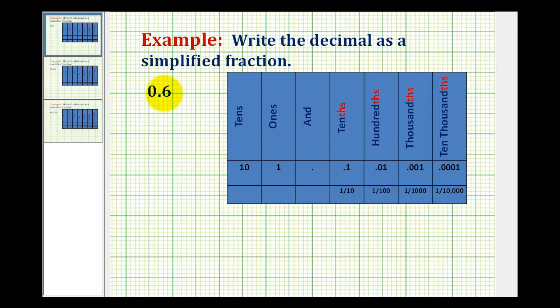Since we have one digit to the right of the decimal, we're dealing with this part of the place value chart. So we can see that this six is in the tenths place value. So as a fraction, this is equal to six tenths.